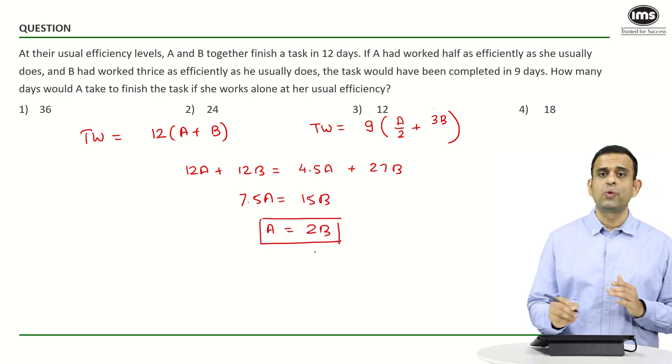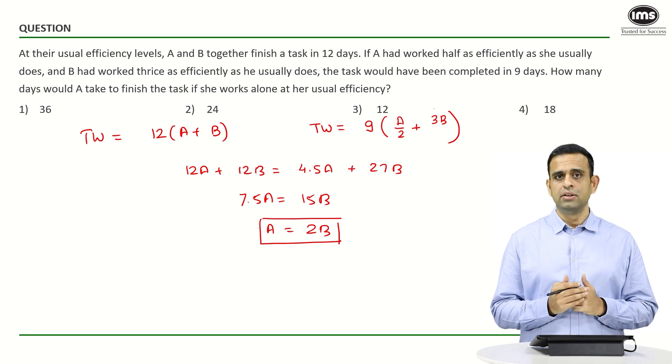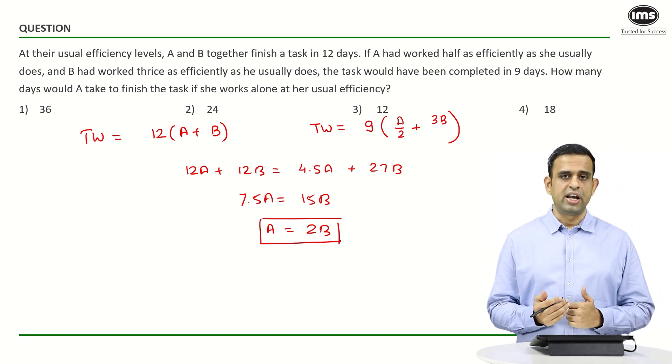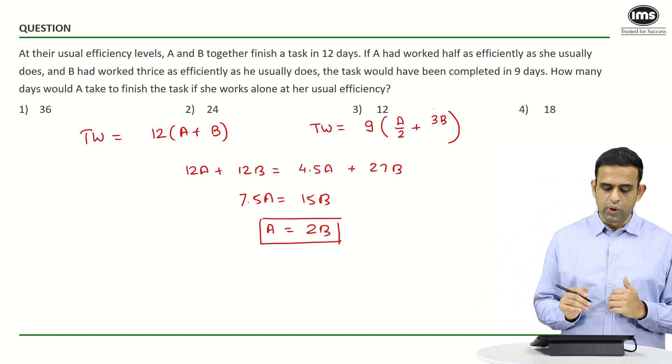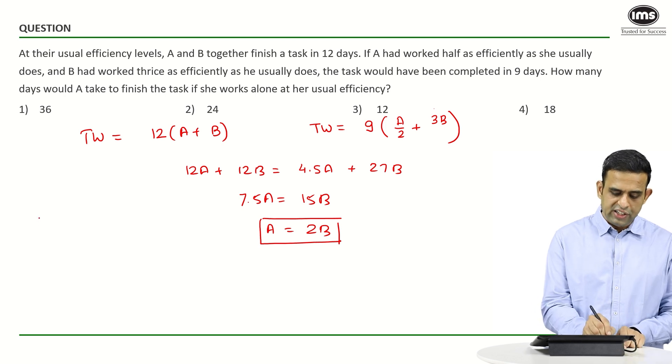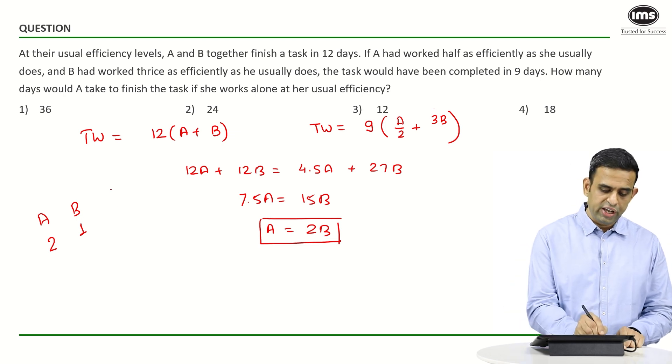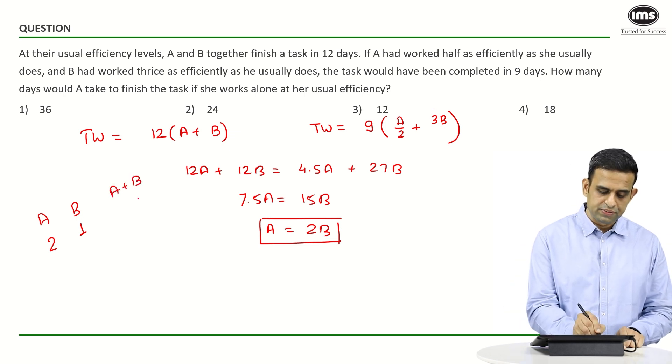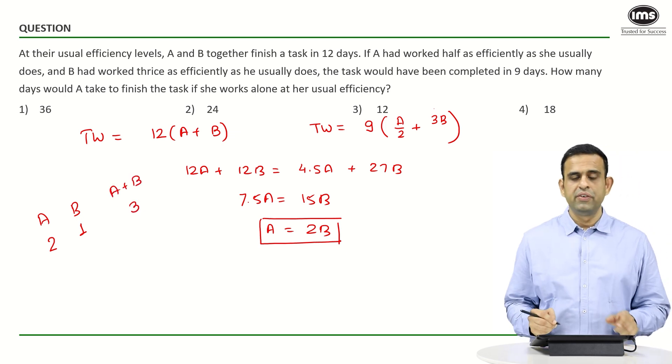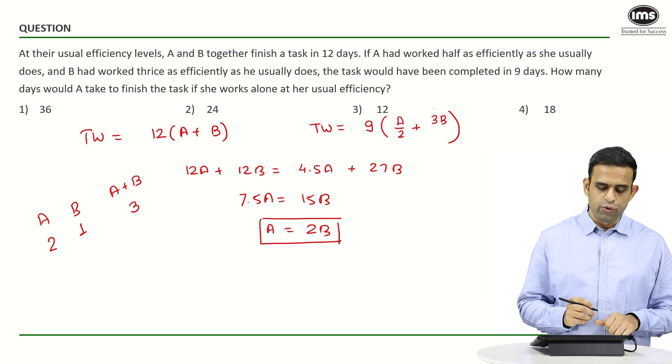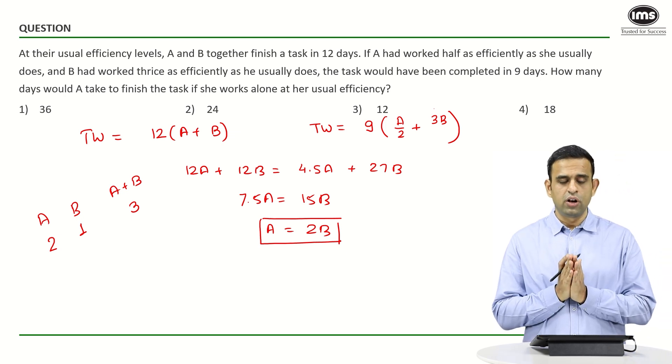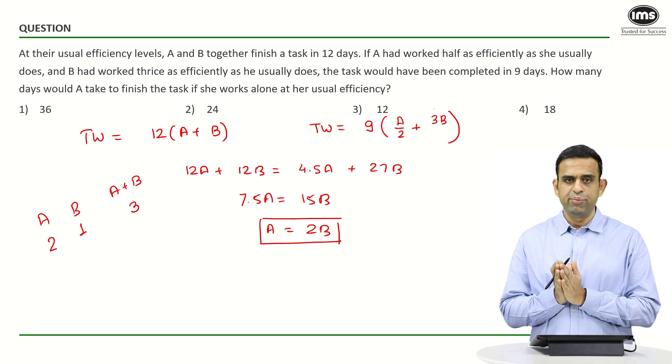What does this mean? A is twice as efficient as B. If B does one unit of work in a day, then A will do 2. What about A and B together? They will do 3.